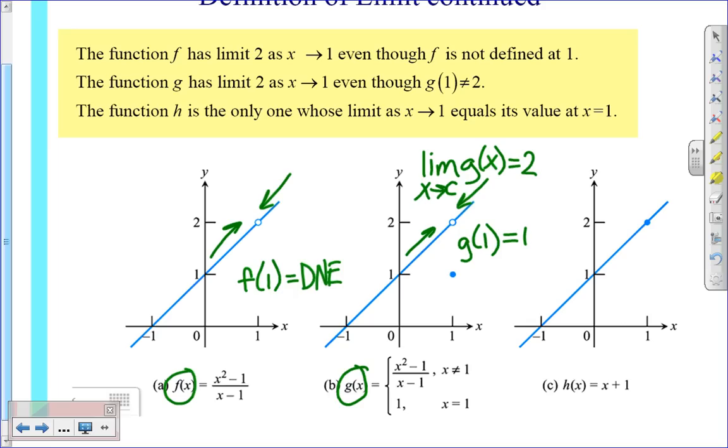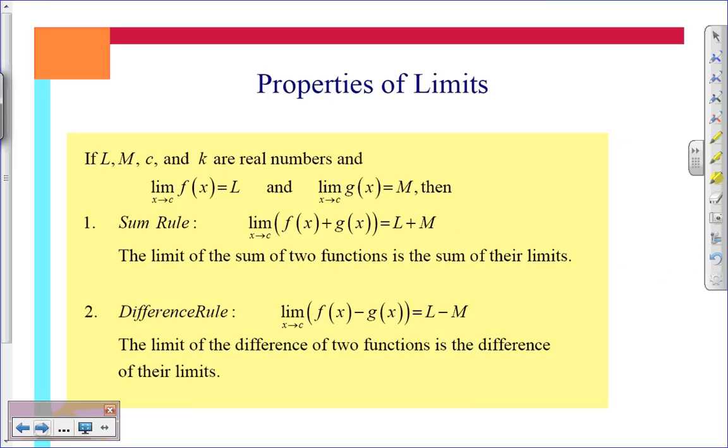In our third example, as x approaches 1 from the left and the right, the limit is 2. So the limit as x approaches 1 of the h of x function is 2. And then you also notice the value when x is 1 is 2. So here are my three examples that illustrate this definition.